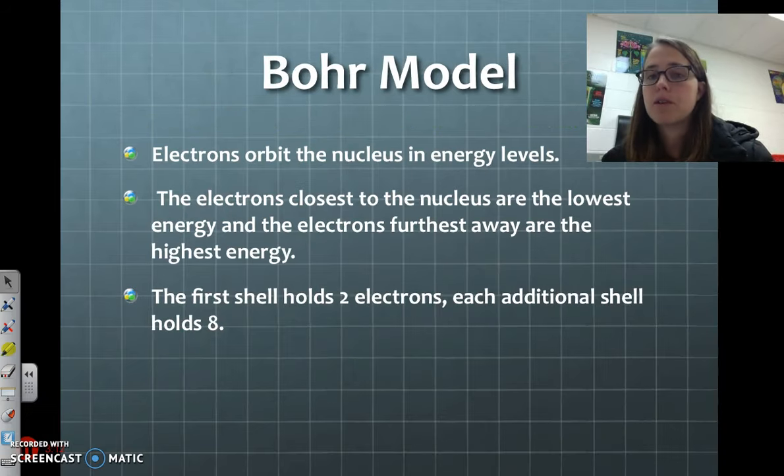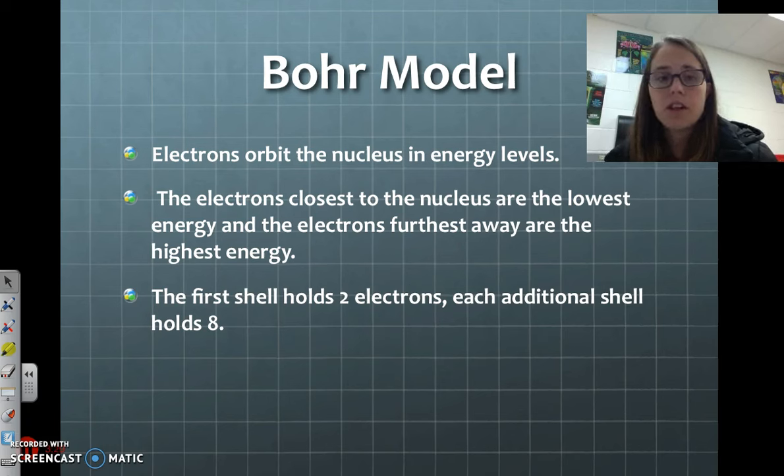The Bohr model is one of the big ones that we've learned, and it talks about how electrons orbit the nucleus in different energy levels. The electrons that are closest to the nucleus are the lowest energy because it doesn't take a lot of energy to keep those electrons in orbit.